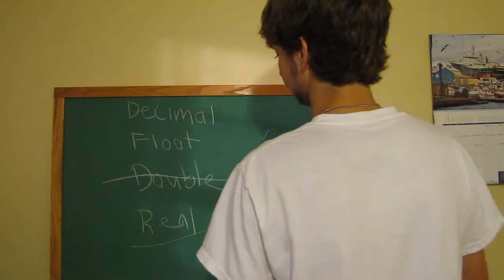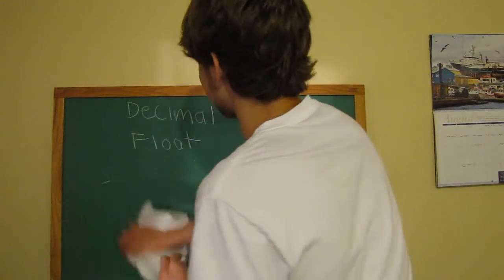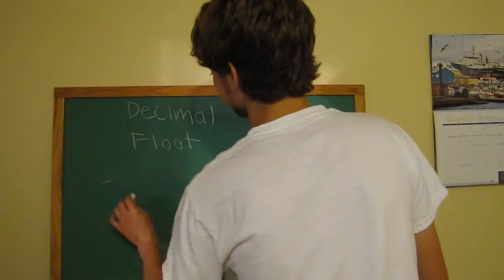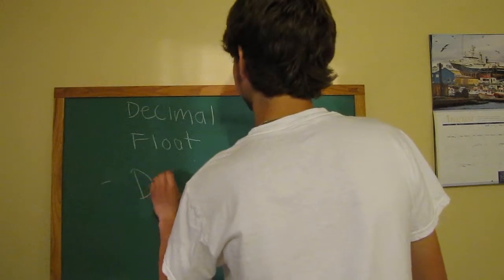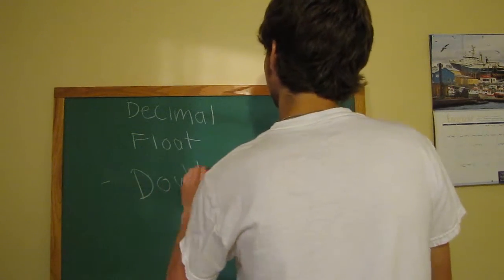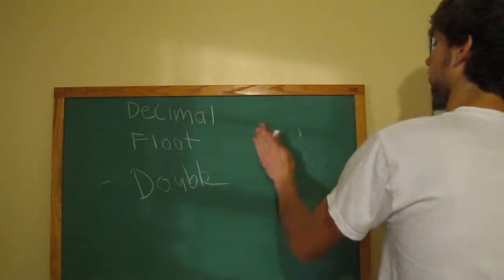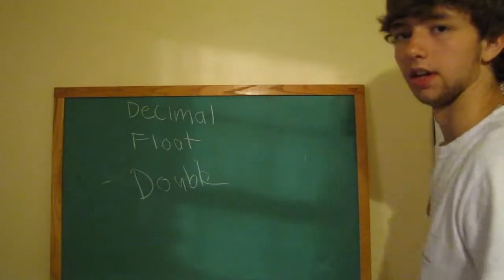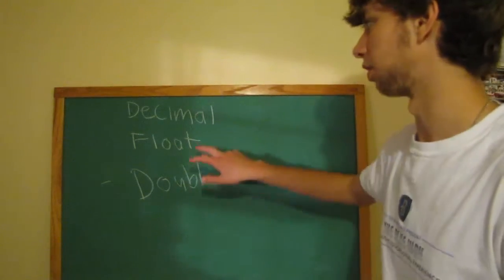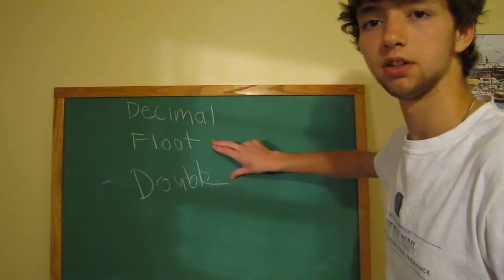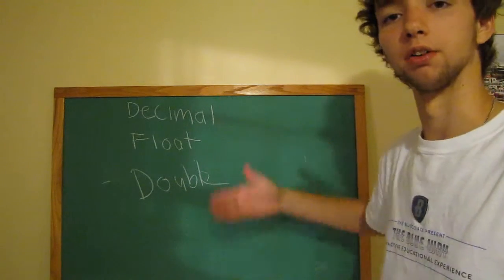Oh, I didn't mean to cross that out. I should have crossed out real. So, just forget about real for now. Now, so we have decimal, float, and double, and I'll be going over decimal first, and explaining everything about that, and then I'll be going over floats and doubles together, and then I'll be comparing all three of them.